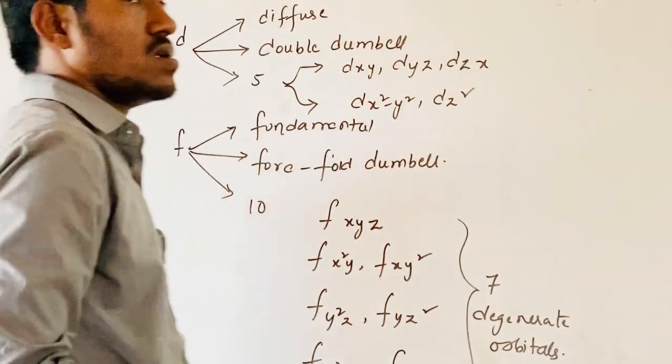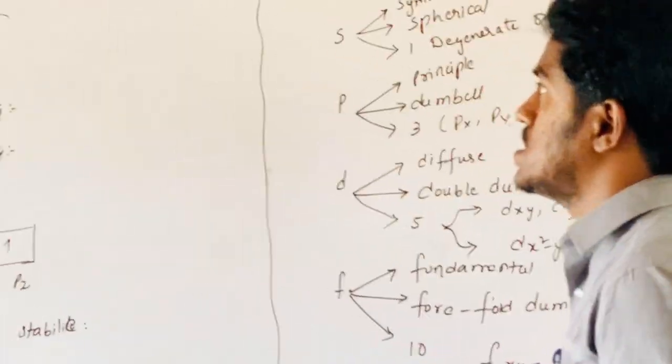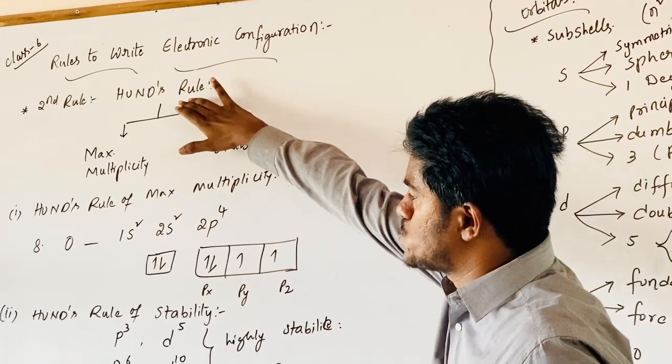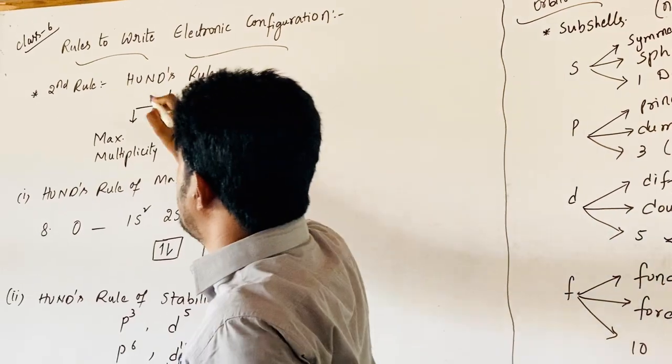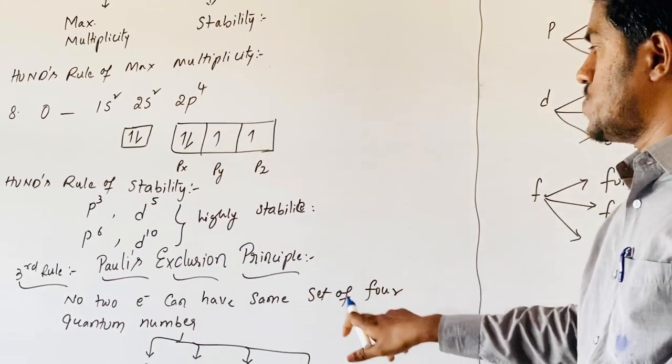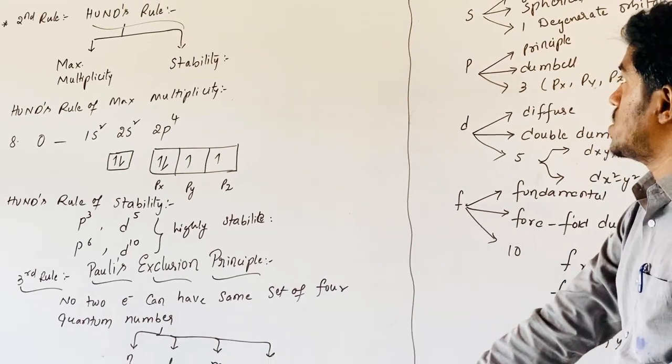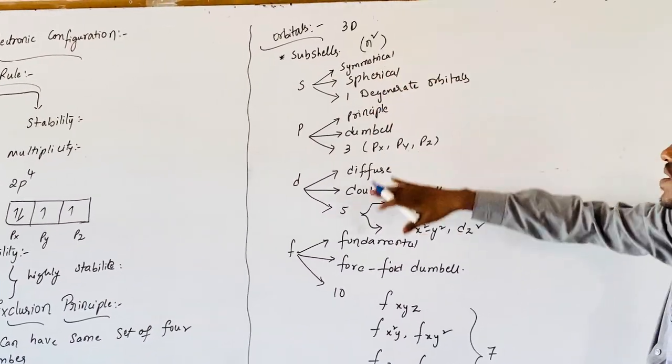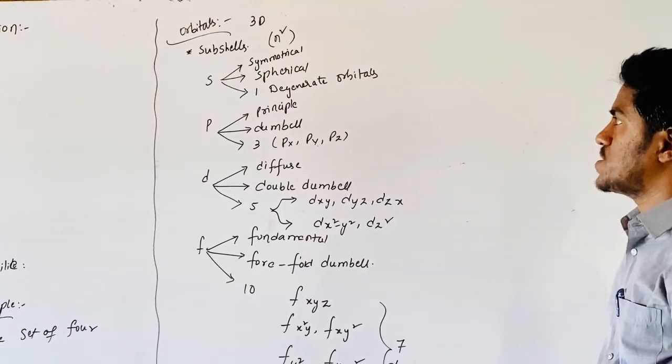Now in this session, we discussed the rules to write electronic configuration. Second rule, that is Hund's rule, classified into two types. And third rule, Pauli's Exclusion Principle, related by the quantum numbers. And the types of orbitals along with their general properties with respect to their classification.